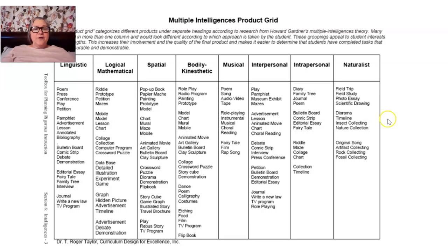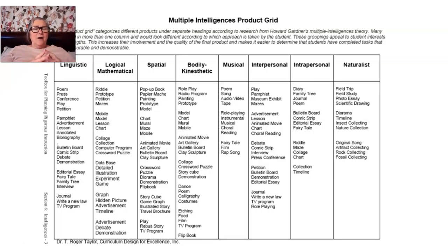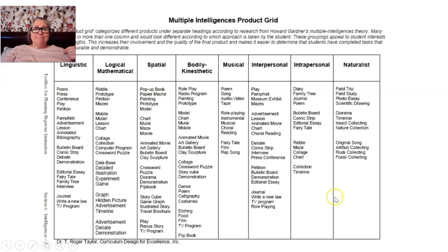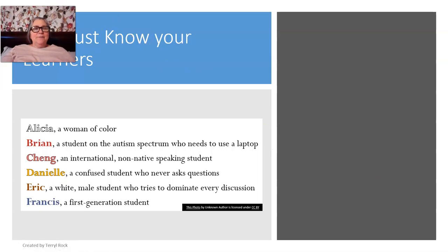This is a product grid, which I think is pretty cool. You sometimes hit a point where you can only think of an essay or a presentation and you're stuck with no idea what else students could make. Here are some suggestions: a diorama, a collage, a fairy tale, a family tree — all kinds of cool stuff. But really, when it comes down to it, you've got to know your learners. If you don't know your learners, that's going to be your biggest problem.